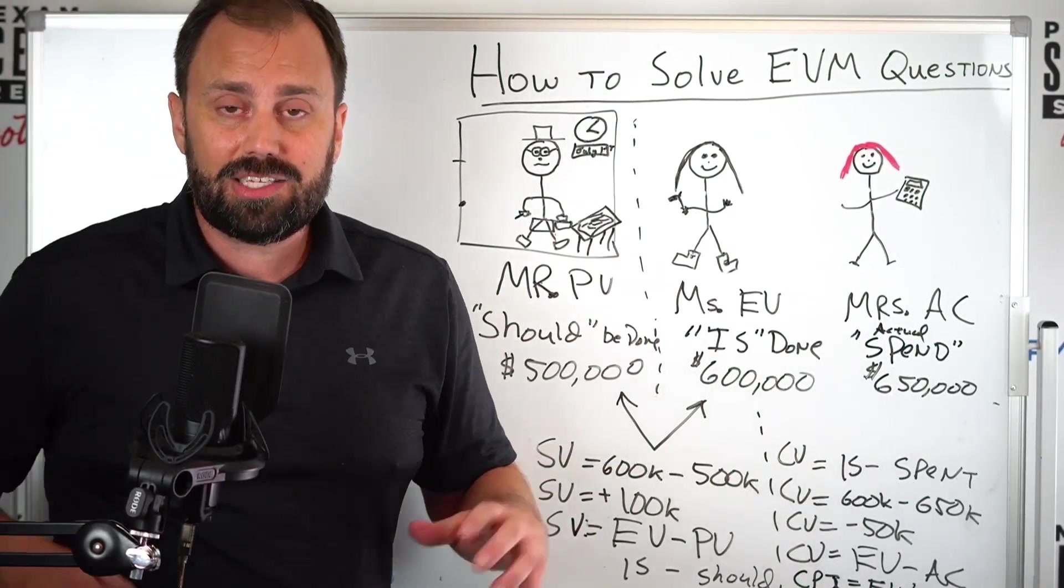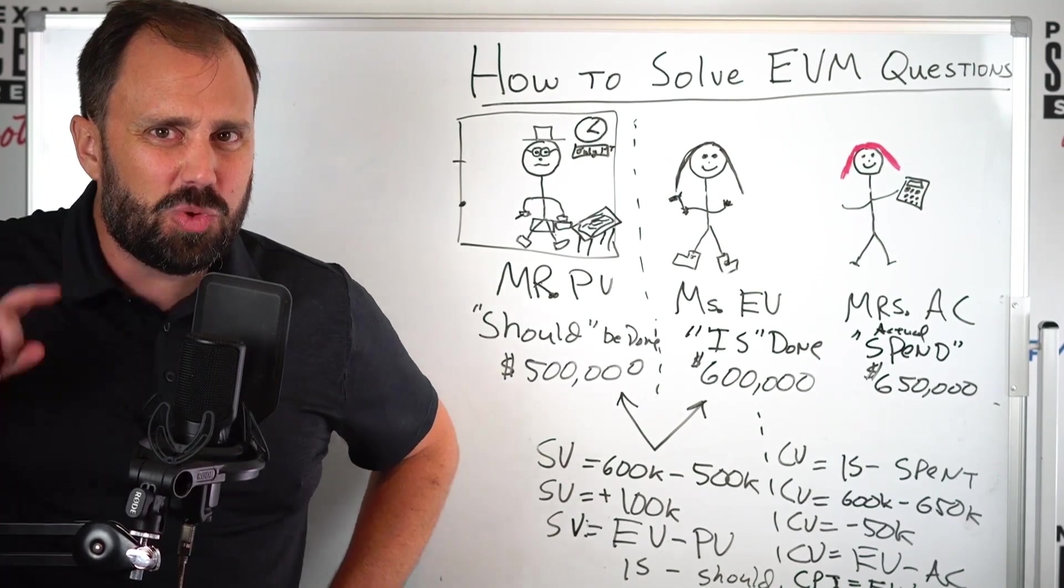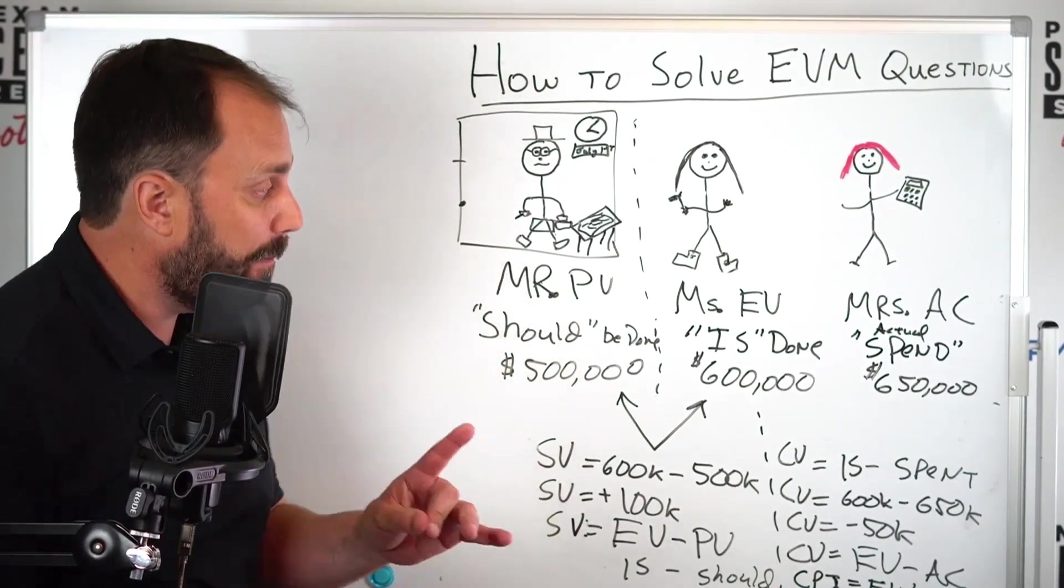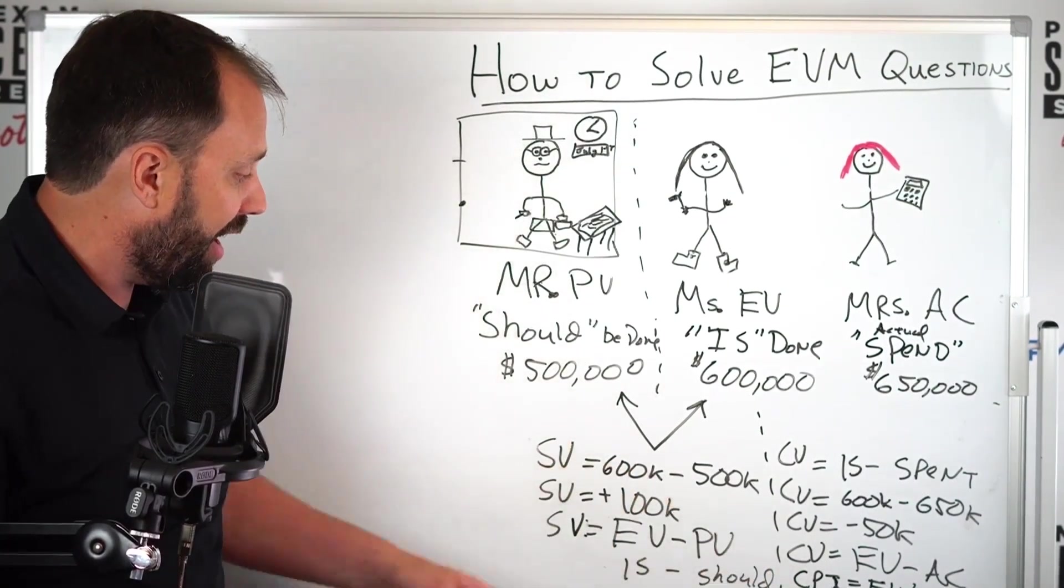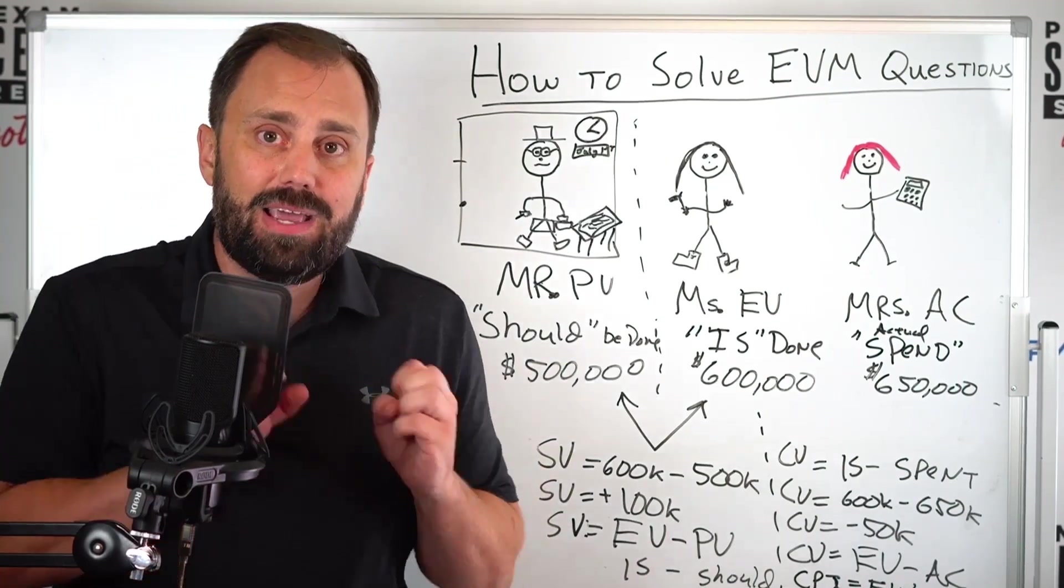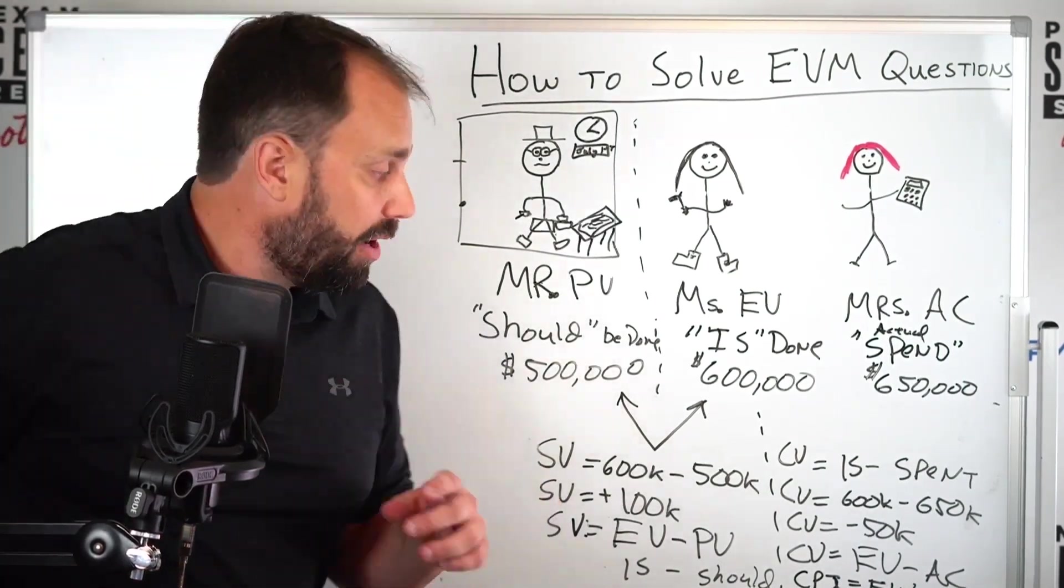And so what you might say - and I'll do this later - is the next thing is, okay, based on if we make these changes, what's our prediction for the future? Now, based on our CPI and our SPI, we can make projections out.